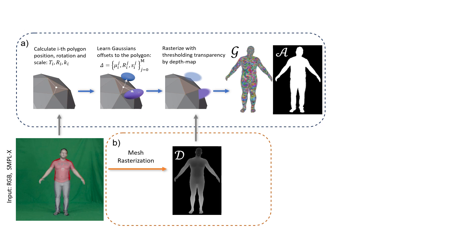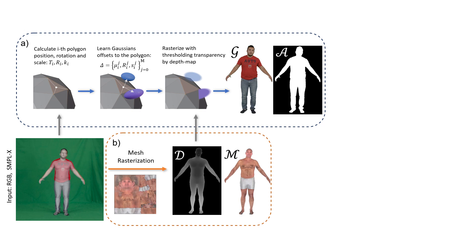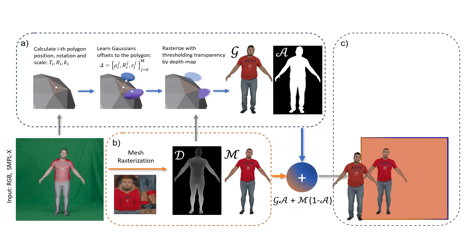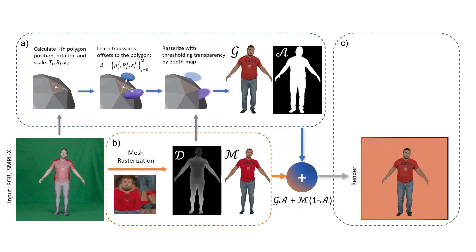As a result, we get Gaussian avatar G and Gaussian transparency map A. In the second stage, we render an avatar as a rasterized SMPL-X mesh with a texture. We optimize the RGB texture using the differentiable mesh rasterizer. We then merge the differentiable rendering of the textured mesh and the differentiable 3D Gaussian splatting results to get a final avatar.